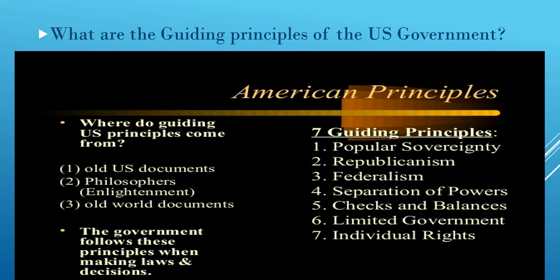We have seven guiding principles: first, popular sovereignty; second, republicanism; third, federalism; fourth, separation of powers; fifth, checks and balances; sixth, limited government; and seventh, individual rights. These should give you an idea of how our government is supposed to function. For example, on the issue of limited government, that is why we have checks and balances and separation of powers — three different branches at the national level that must work together to meet the needs of the nation.